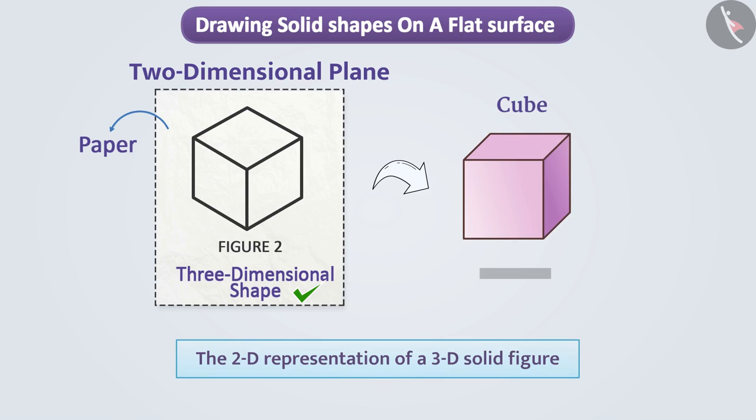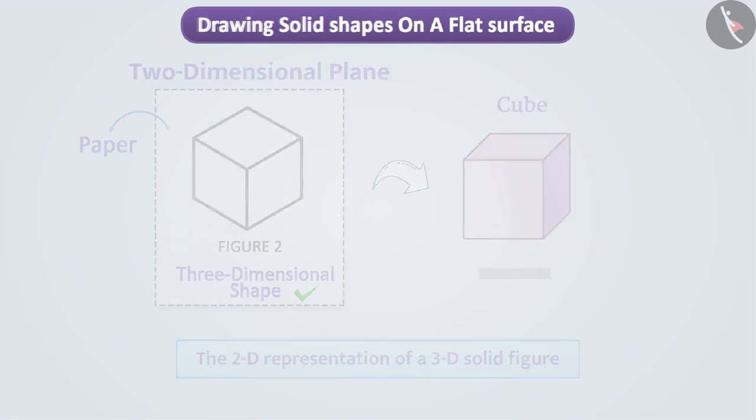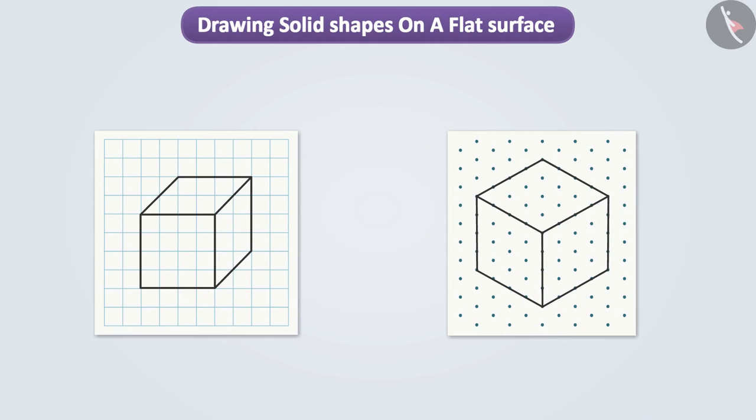Would you like to know how it is done? In this video we will learn two techniques with the help of which we can make a 2D representation of a 3D solid figure. One of these techniques is oblique sketch and the other technique is isometric sketch.